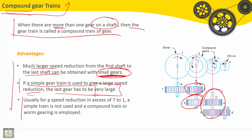Usually for a speed reduction in excess of 7 to 1, a simple train is not used and the compound train or worm gearing is employed.